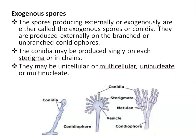Exogenous spores are spores produced externally, and are called exogenous spores or conidia. They are produced externally on branched or unbranched conidiophores. Conidiophores are conidia-bearing structures. Conidia may be produced singly or in chains — you can see chains of conidia here. They may be uninucleate or multinucleate, unicellular or multicellular.